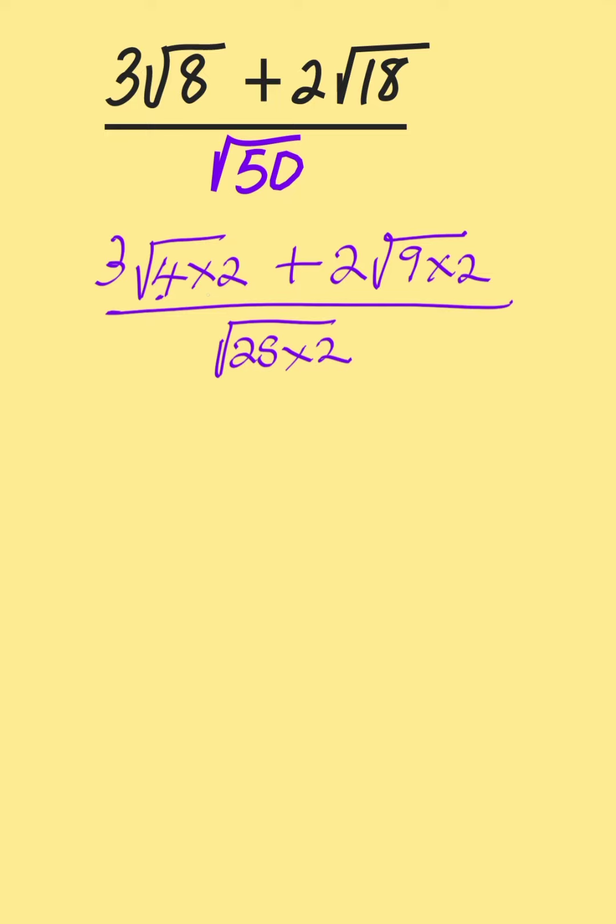The square root of 4 is 2, 2 times 3 is 6√2. Plus the square root of 9 is 3, 3 times 2 is also 6√2. All over the square root of 25, which gives us 5√2.